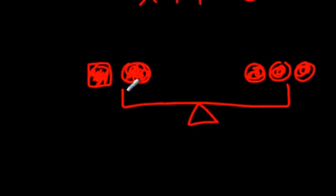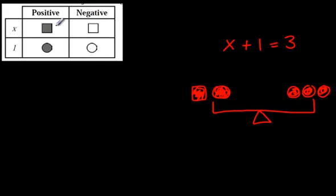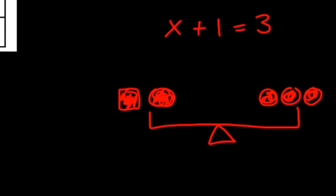So in this question, it's saying that x plus 1 is equal to or is balanced with 3. So what we do is we use some symbols here. x, at least positive x, is a square that's shaded in. A negative x is a square not shaded in. A 1 is a circle shaded in. A negative 1 is a circle that's not shaded in.